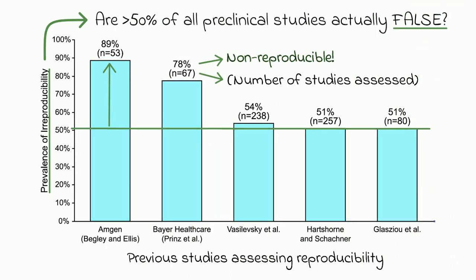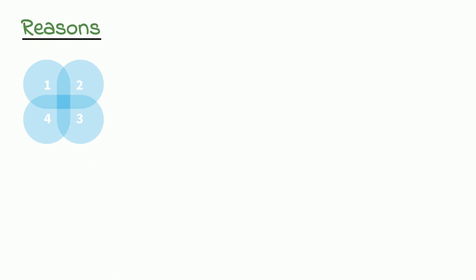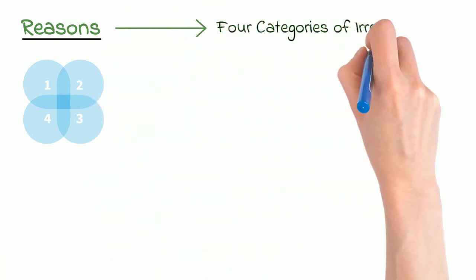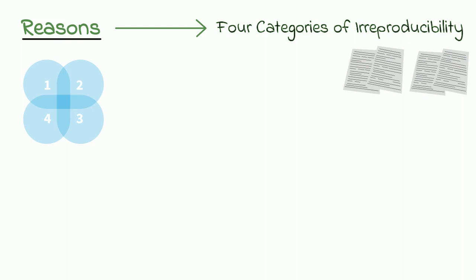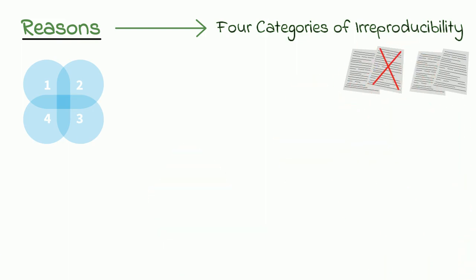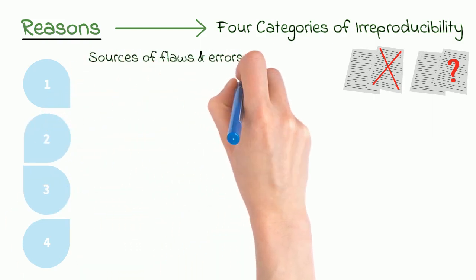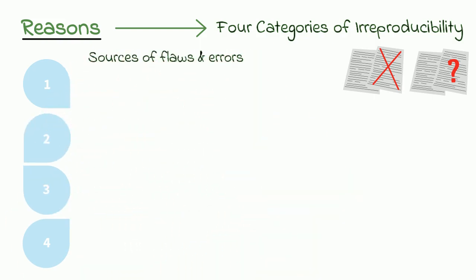Well, that depends on what it is about these studies that actually causes this inability to replicate the results. Because non-reproducibility can mean anything from the results are false, to I'm not sure how they performed that experiment. The authors came up with four broad, and in some cases overlapping, categories which could act as the potential sources for flaws or errors in reproducibility.